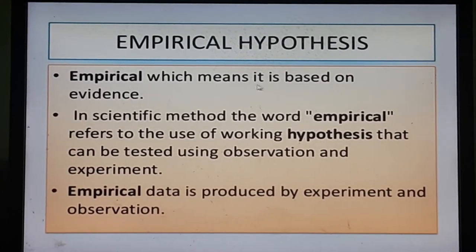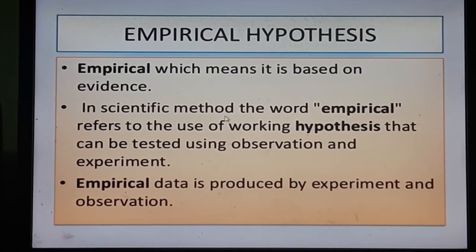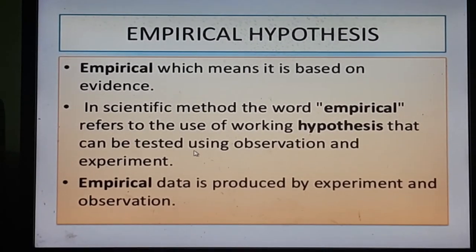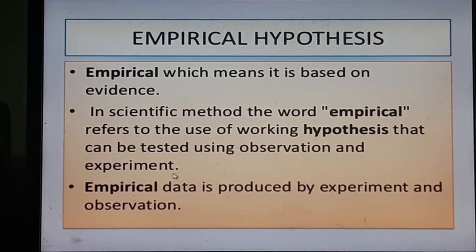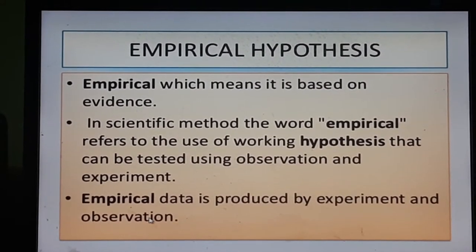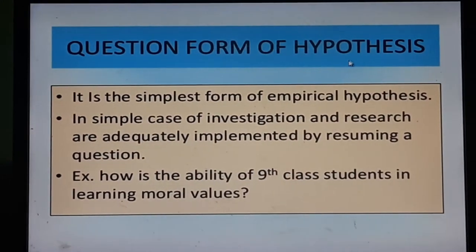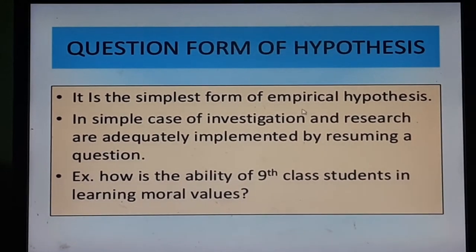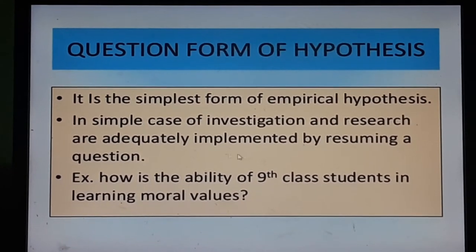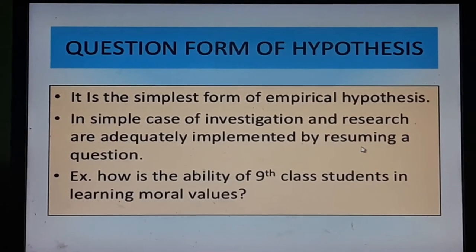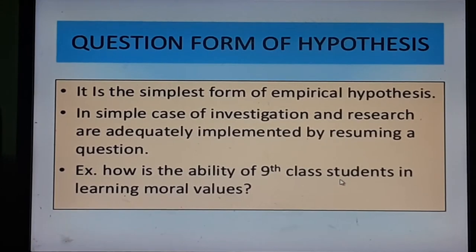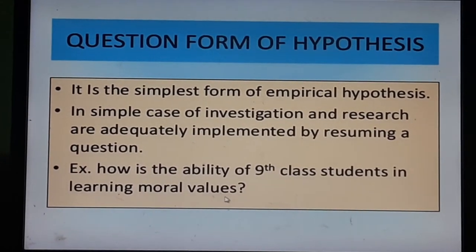Empirical hypothesis means it is based on evidence. In the scientific method, the word empirical refers to the use of a working hypothesis that can be tested using observation and experiment. Empirical data is produced by experiment and observation. In the question form of hypothesis, simple cases of investigation and research are adequately addressed by posing a question — for example, how is the ability of ninth class students in learning moral values?